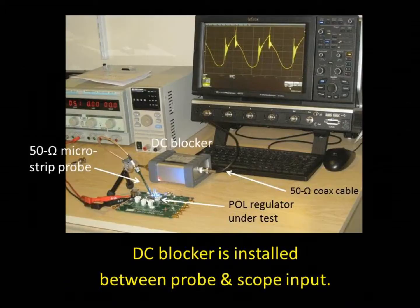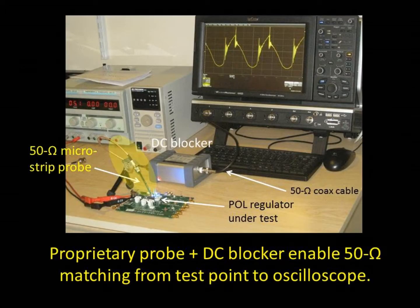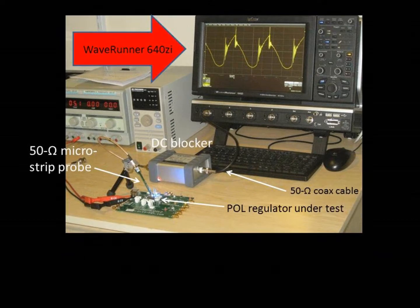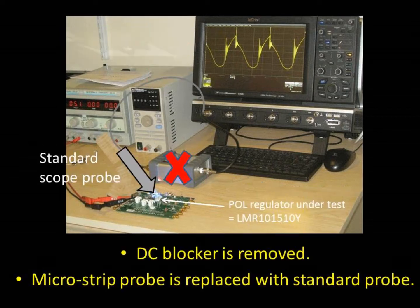An example test setup is pictured here. It includes a proprietary 50 ohm microstrip probe developed by Picotest. This setup was used to measure the output ripple of an LMR1015-10Y buck regulator. Using the same WaveRunner 640ZI oscilloscope, the output ripple of this point of load regulator was also measured using a high impedance scope probe without the DC blocker installed.